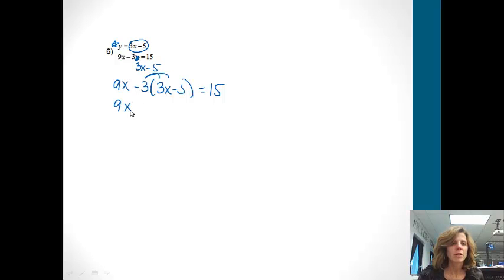Now let's go ahead and distribute. I'm going to get 9x minus 9x plus 15 equals 15. And then 9x minus 9x, they just cancel each other out, so I'm left with 15 equals 15. So notice there's nothing left to solve for anymore, but 15 does equal 15.